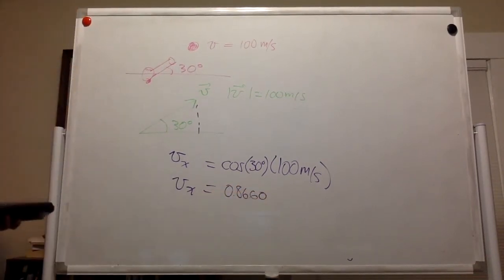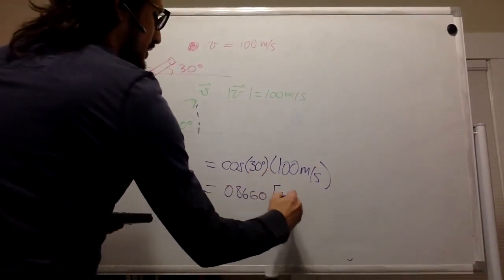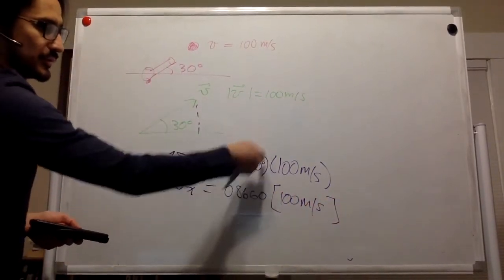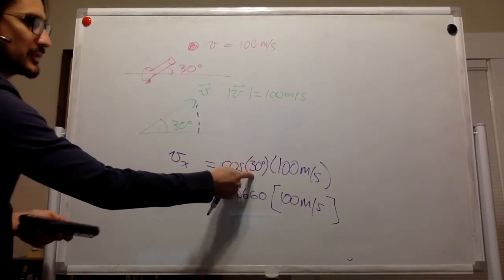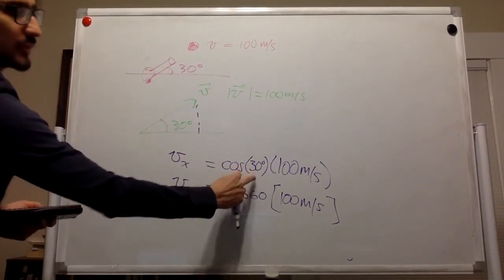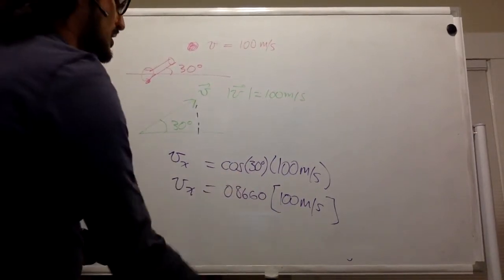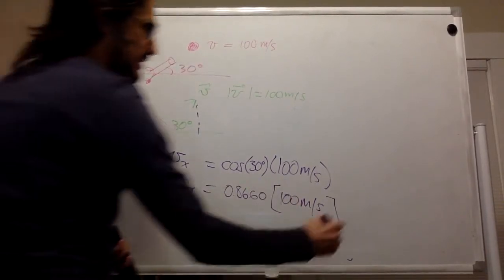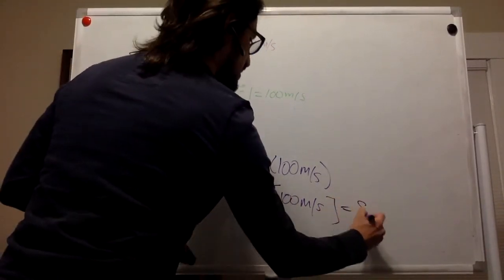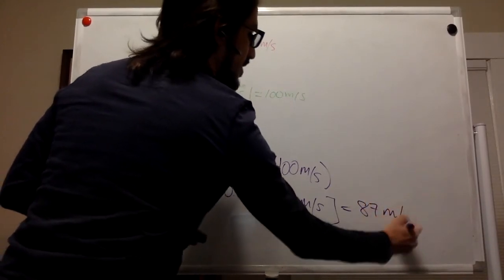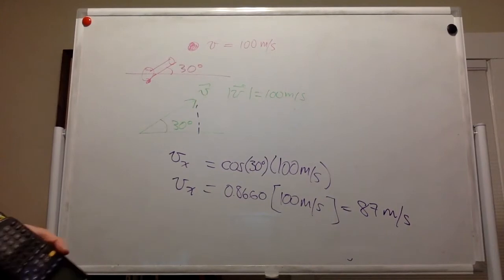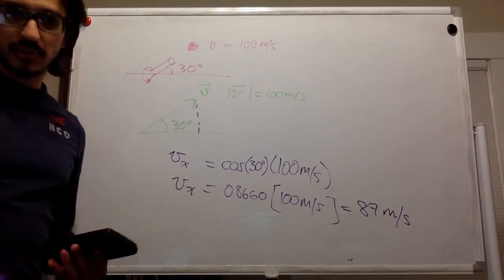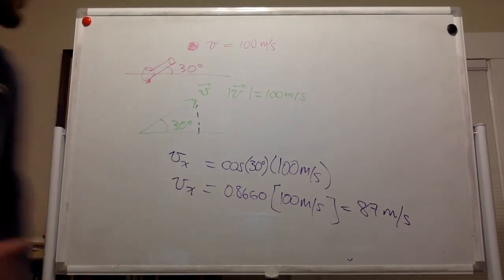Times 100 meters per second. There are no units inside the argument of a trigonometric function, so cosine of 30 is unitless. This has units of meters per second, which is what we want because this is a velocity. So this is going to be approximately 87 meters per second. That is the answer we have on the homework. This is Part A.